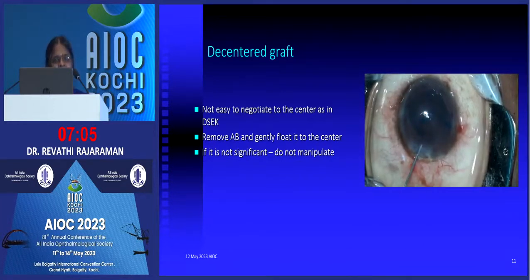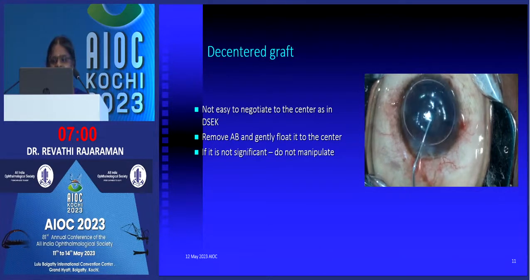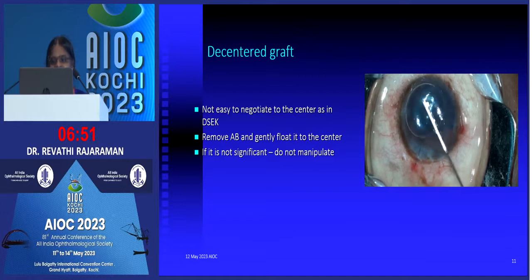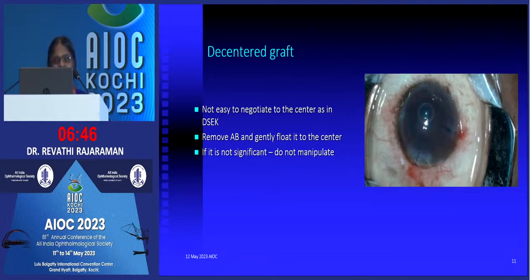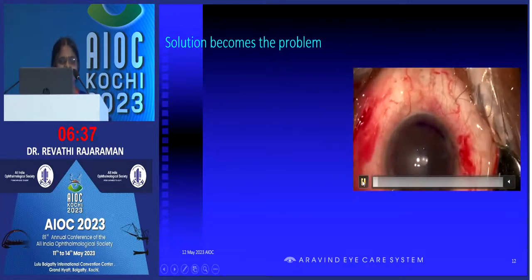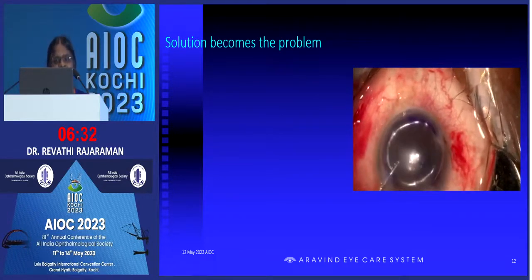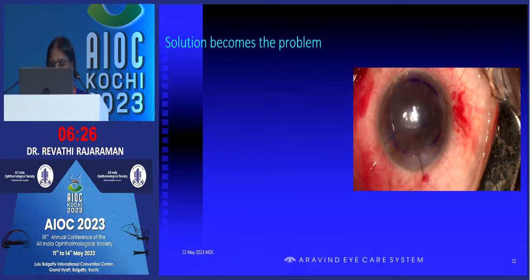The decentered graft is another issue I want to emphasize — it is not like DSEC. Once you see a decentered graft, you can't just tap and bring it; it's quite difficult. Sometimes we have to deflate partially and then slowly bring it to the center. Unlike DSEC tissue, this is not easy to manipulate. A large peripheral anterior synechia can be a big problem — as shown in this previously presented video — if you inject, the air can go through the PA posteriorly. So nowadays I try to avoid even a very small PA, and there are reports that cases can be done even without PA.